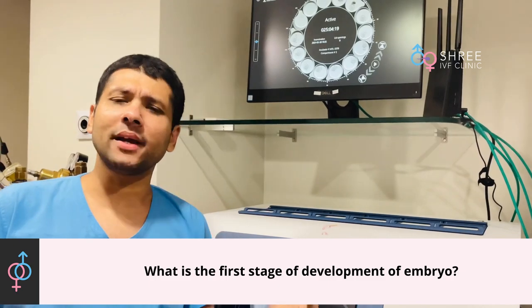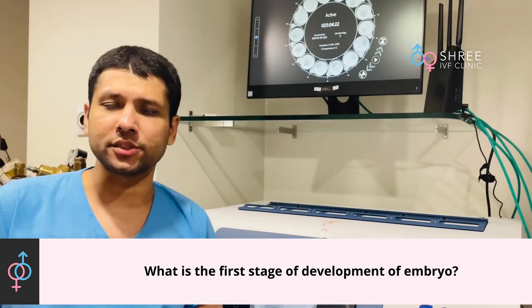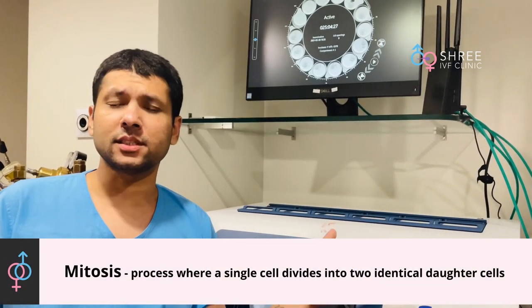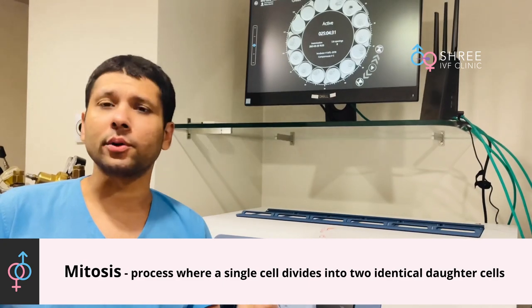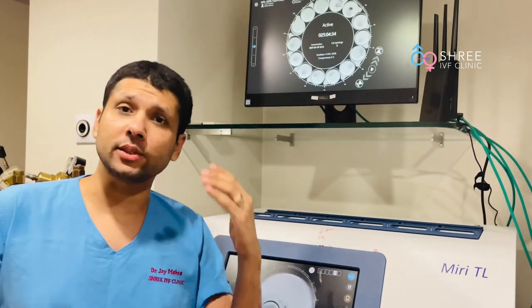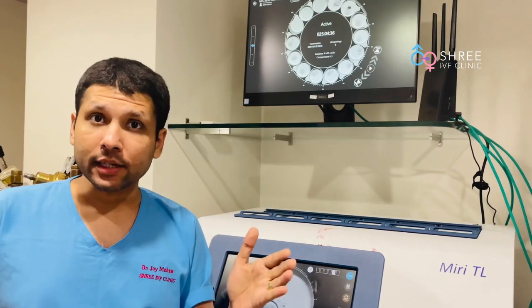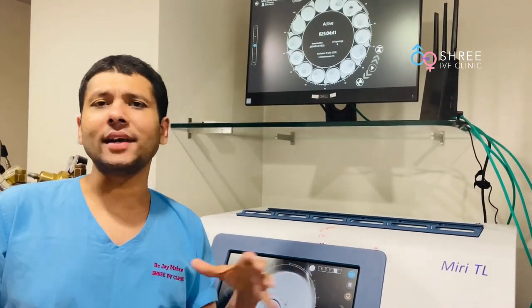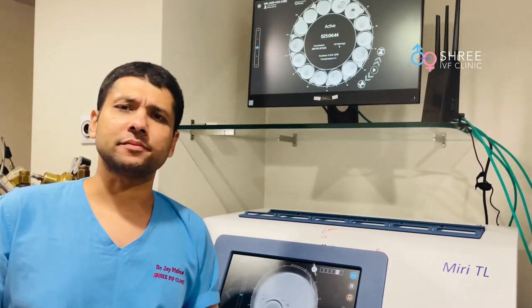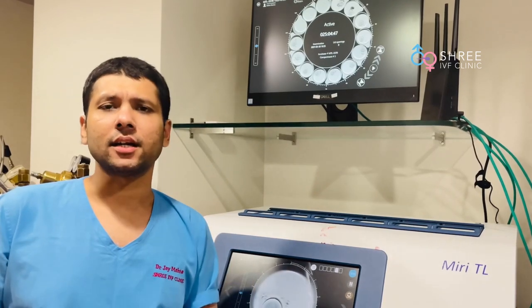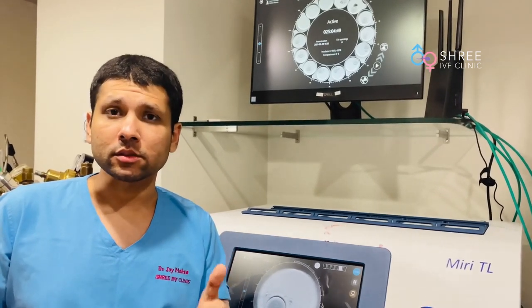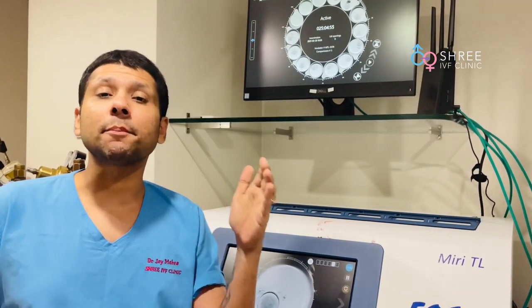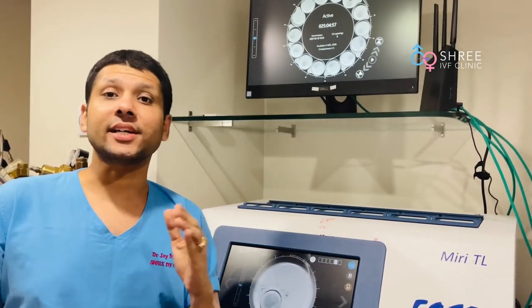We all begin as a single cell — we've studied this in biology. We begin as a single cell and then we begin to divide; this division is called mitosis. The embryo also goes through this journey at a specified timeline. When IVF or ICSI is done, we need to choose the best possible embryo — the one which can help in implantation.